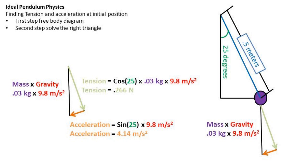For the acceleration, we can take the sine of the angle times the acceleration due to gravity to give us 4.14 meters per second squared.